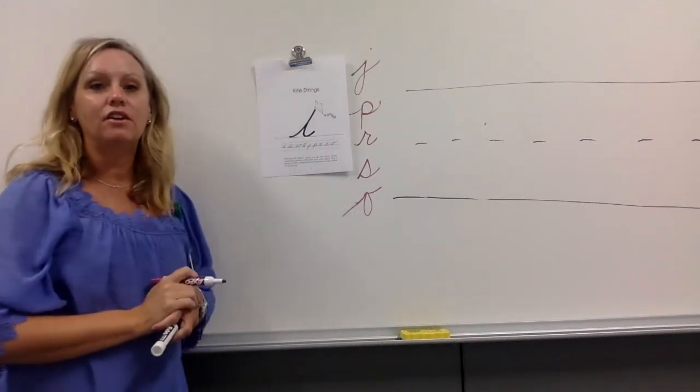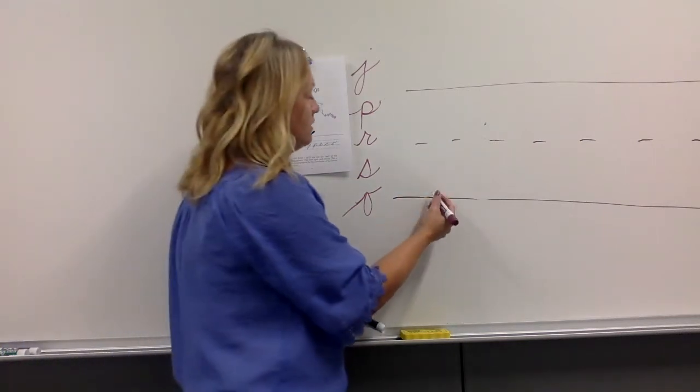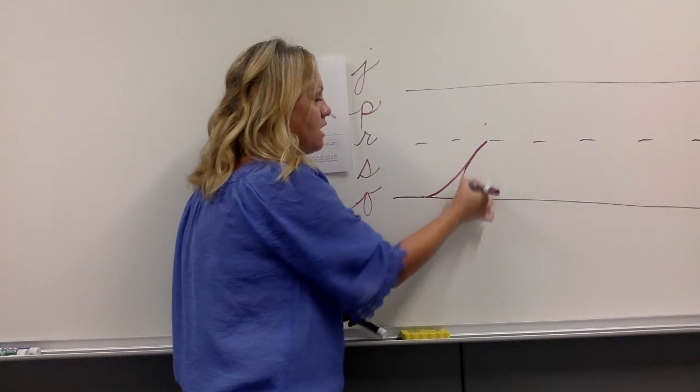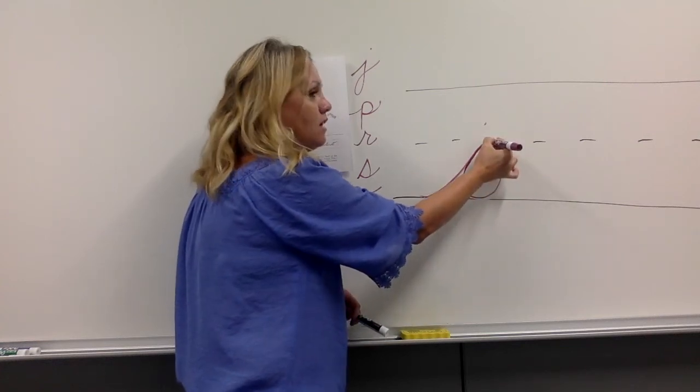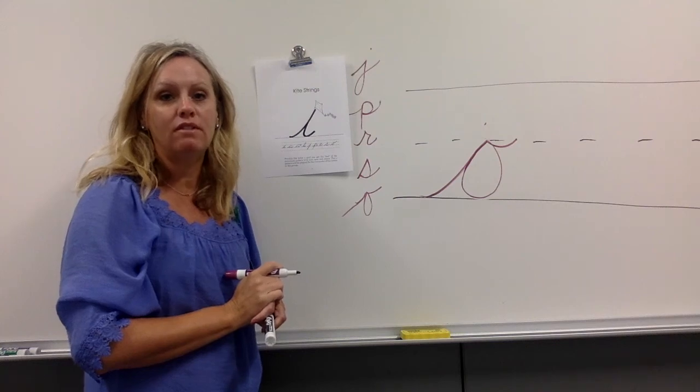Okay, the last letter in our kite string group is the letter O. Start at your bottom writing line. Kite string up to the middle divider. Retrace down a little, make an egg, touch at the top, and release at the middle divider.